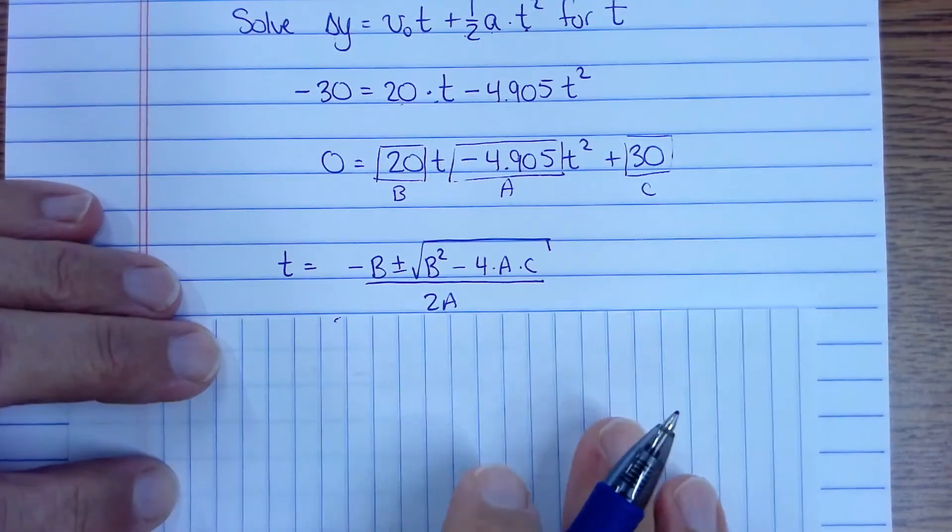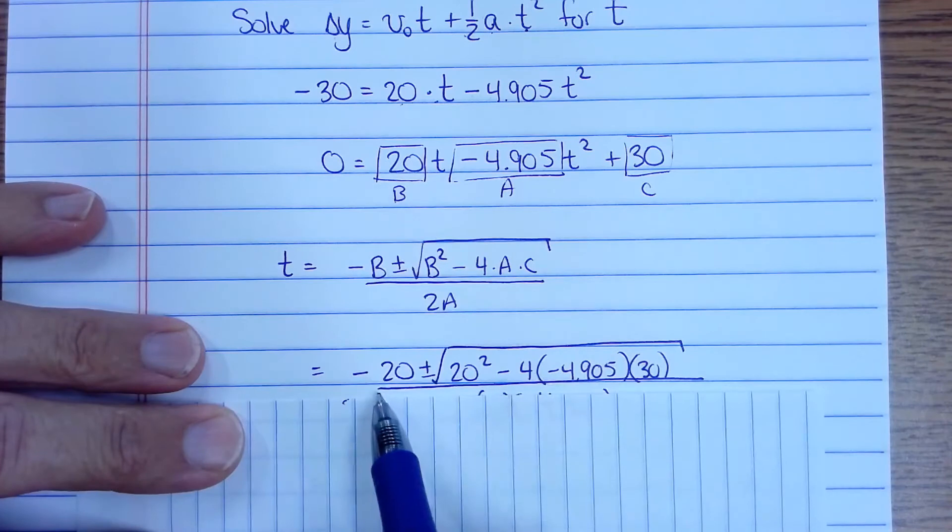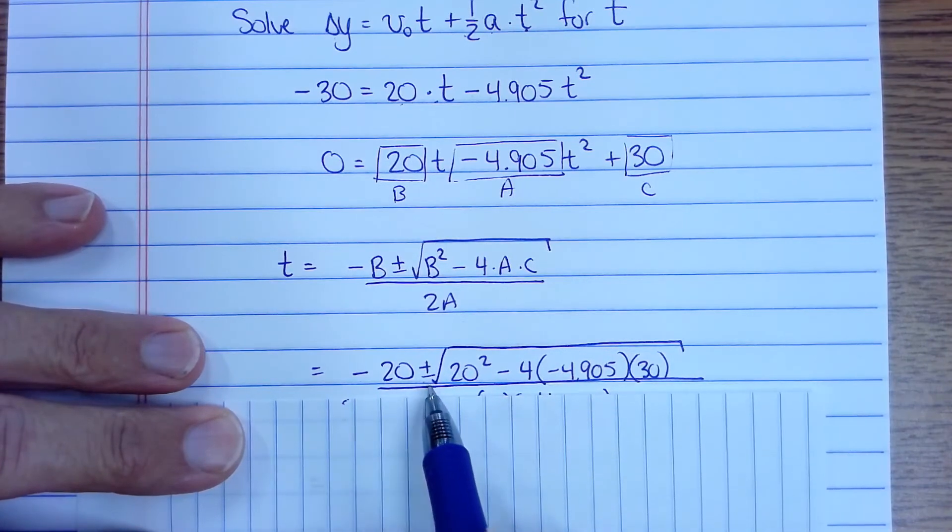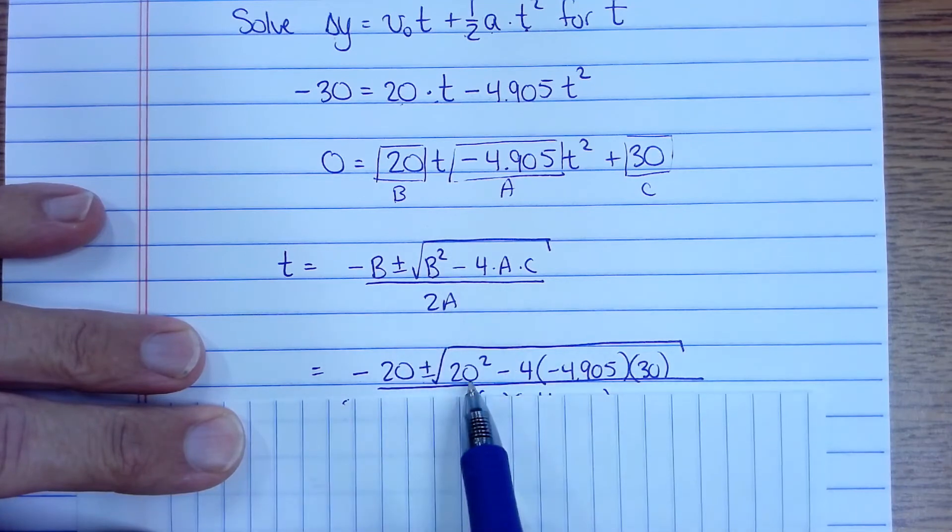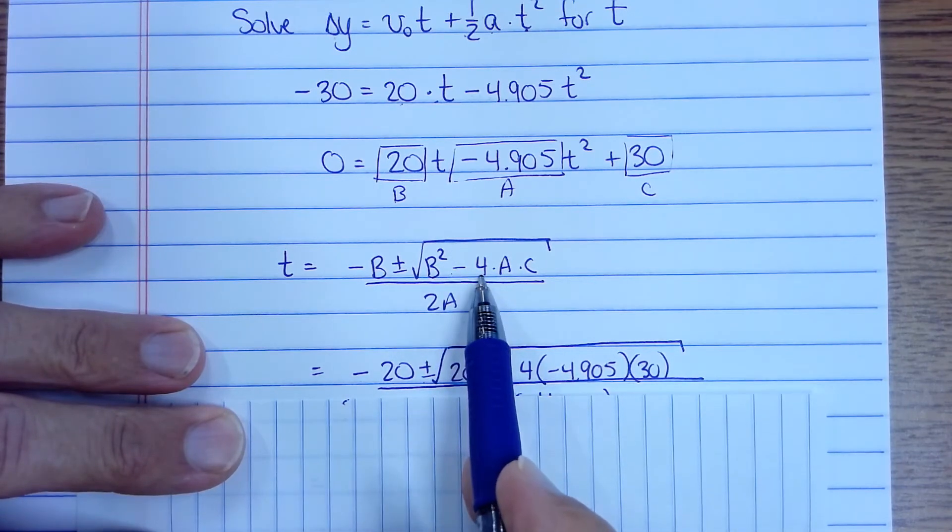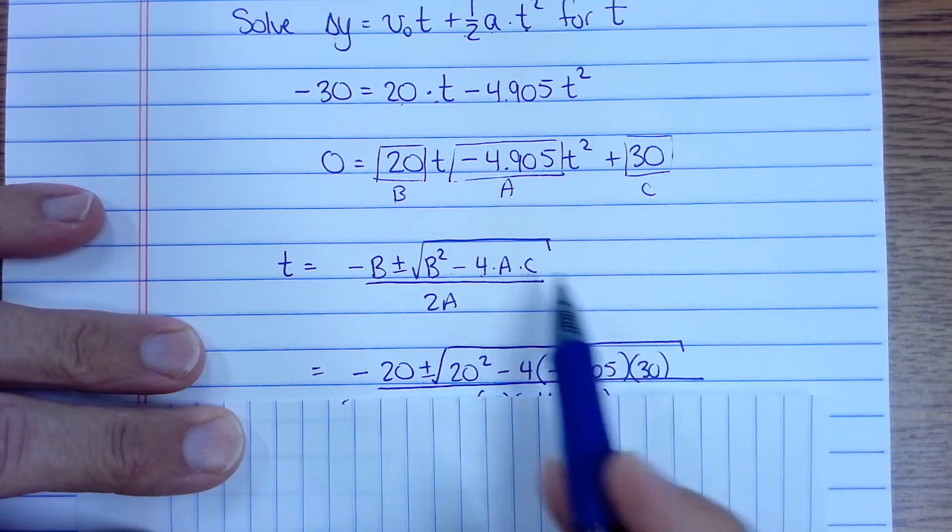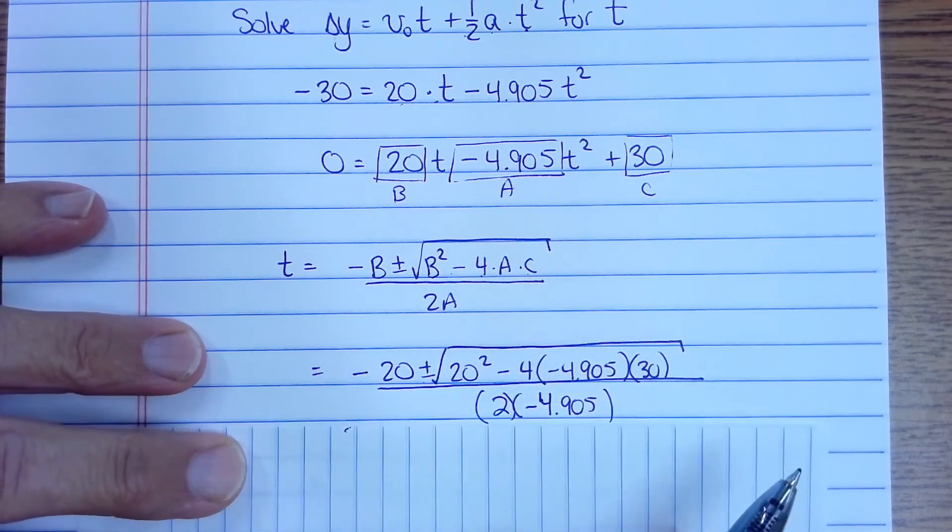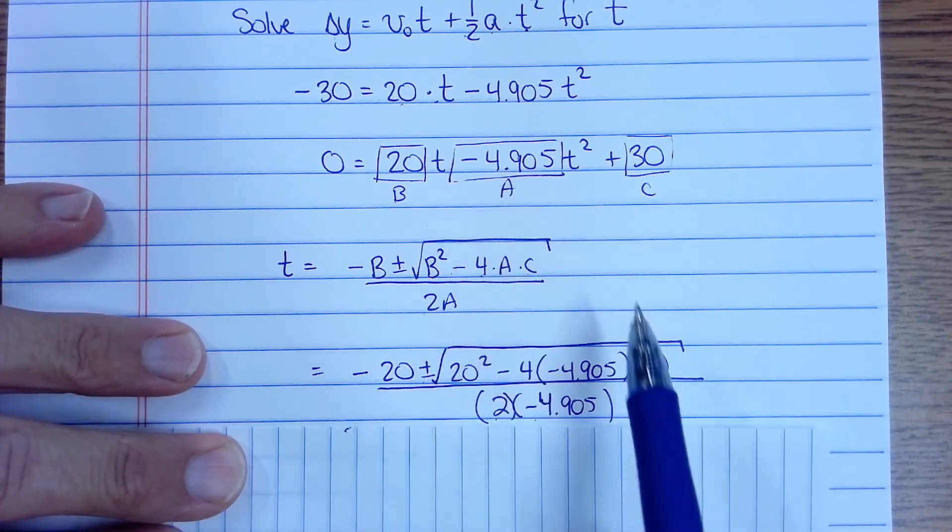So for my problem I just plug in those things. B is 20. So it'll be negative 20 plus or minus the square root of b which is 20 squared minus 4 times a which is negative 4.905 times c which is 30 divided by 2 times a. So that's 2 times a is negative 4.905.